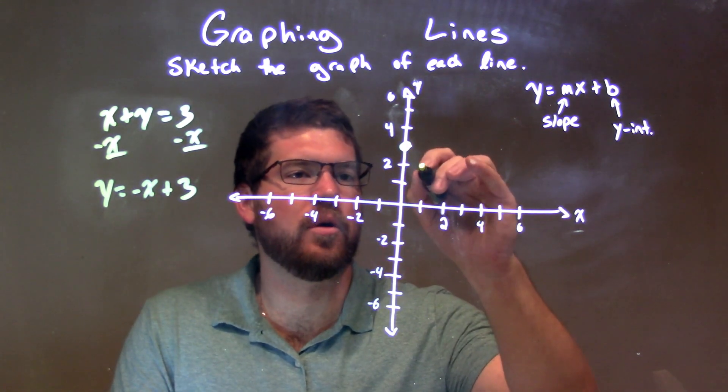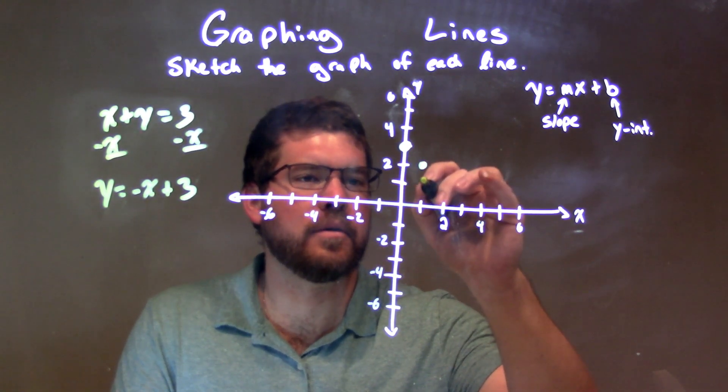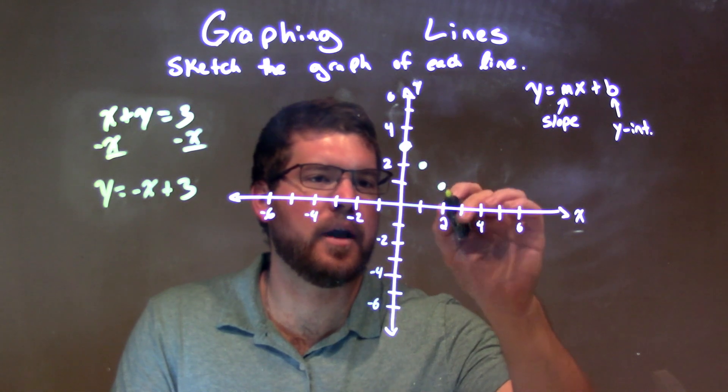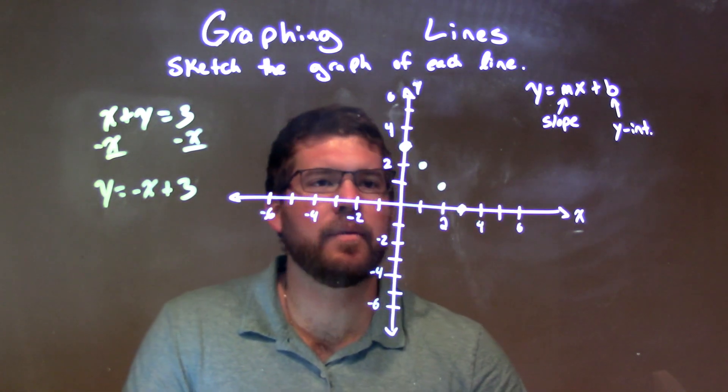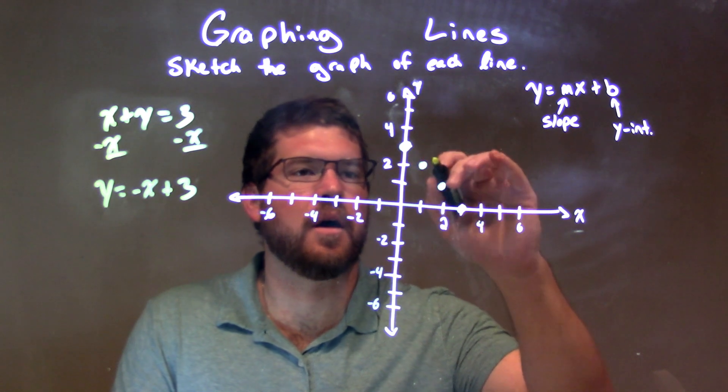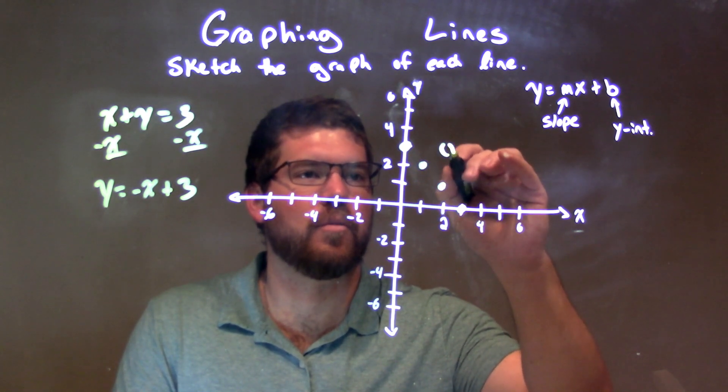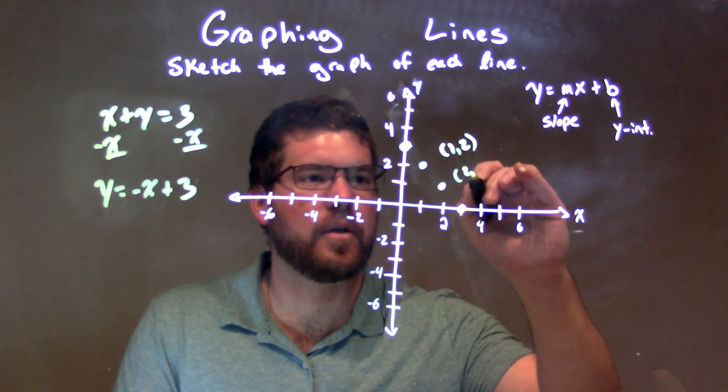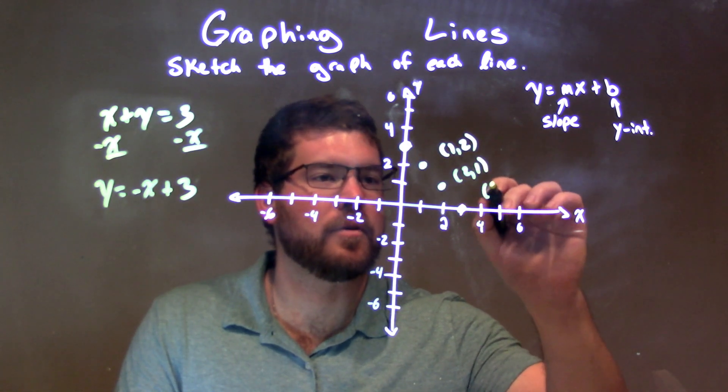So let's go down 1 over 1, down 1 over 1, and down 1 over 1. And so some of these points, we can see this one, for example, is 1 comma 2, this is 2 comma 1, and this last one is 3 comma 0.